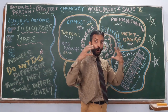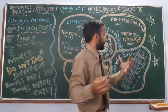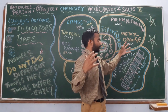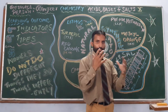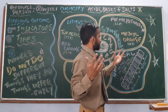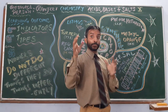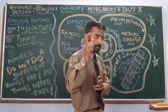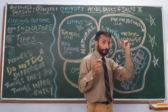Next is methyl orange. As the name indicates, originally it is orange in colour. In acid it becomes red, and yellow in the base.